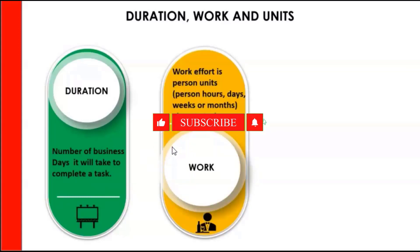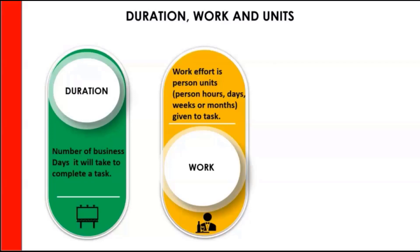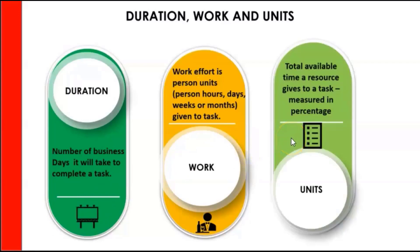So let's look at work effort. It's the person units — person hours, days, or weeks entered for a task. So the task is two days, but you have three people working on it. Each person will work eight hours each day, so you're going to have business days where each day is eight hours. Think of the work effort as your cost — you are going to have to pay 48 hours of work. Units is the total available time a resource gives and is measured in percentage. When we fill out our resource sheet, we put some people at 100%, which means they're working eight hours, and some at 50%, meaning they're available for four hours.